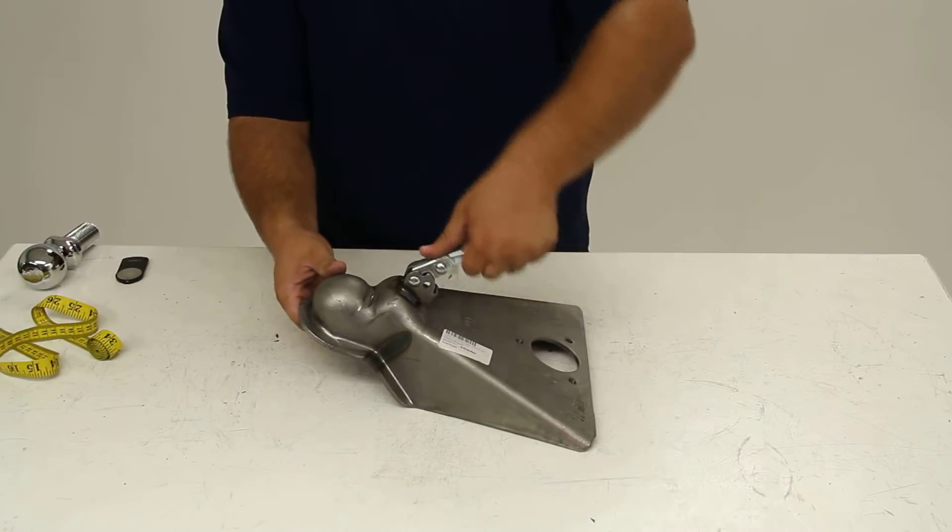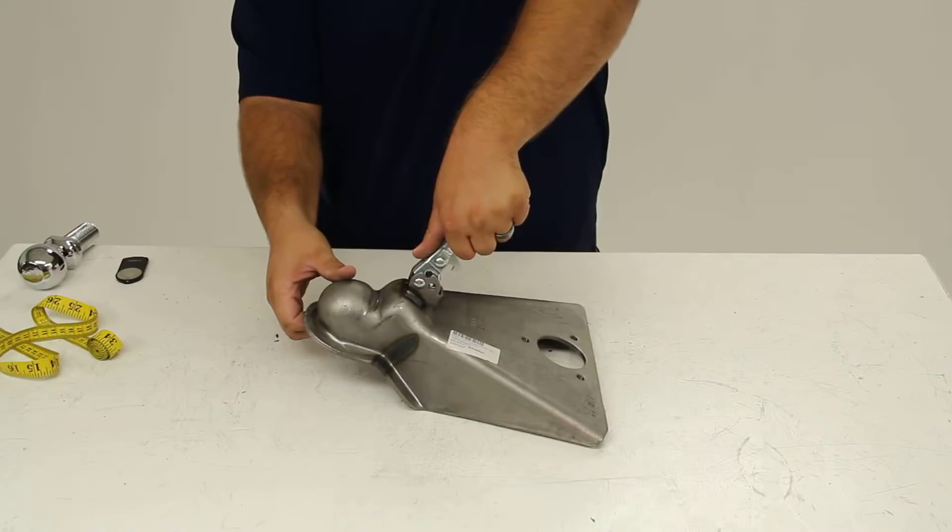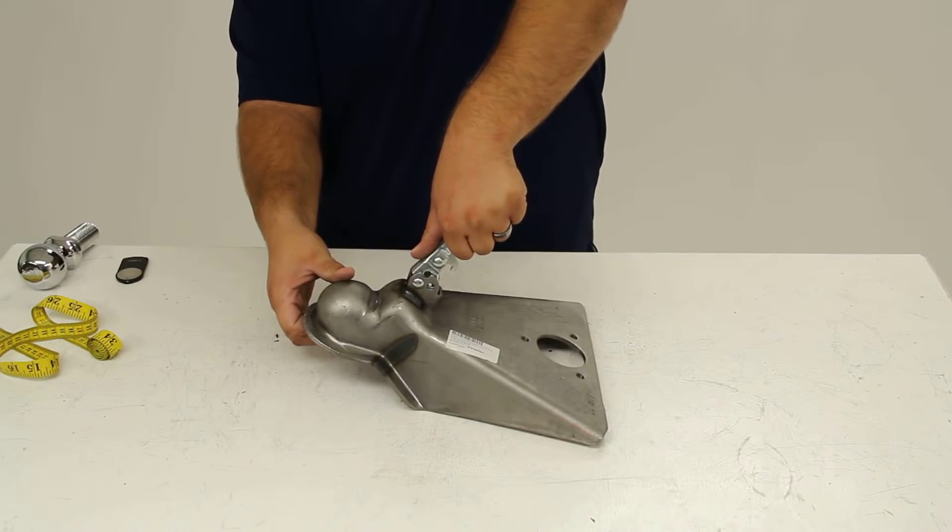When you open the latch the hole lines up with the cutouts in the top of the mount so you can reinsert that pin and keep the ball open or keep the jaw open while you're hooking or unhooking your trailer.